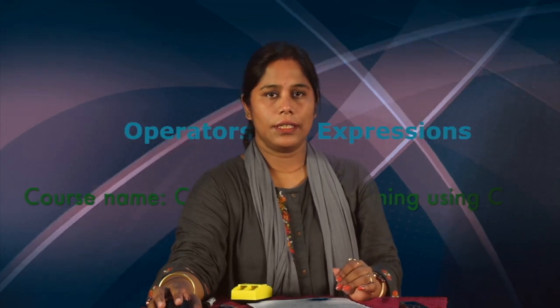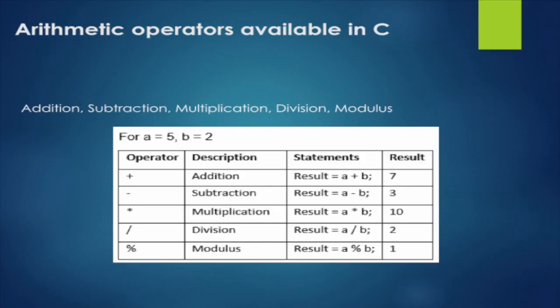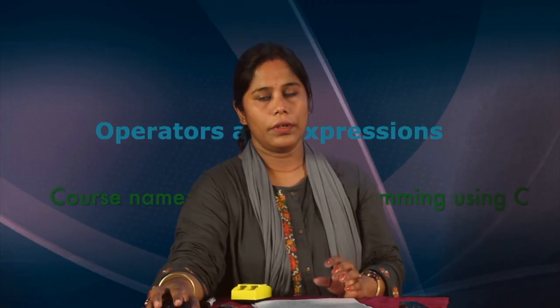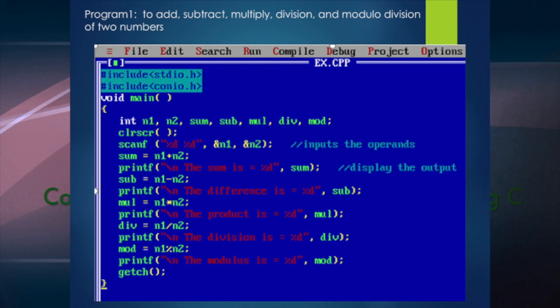I have listed all arithmetic operators in a table. Suppose variable A is 5 and variable B is 2. The plus operator gives A plus B equal to 7. The subtraction operator gives A minus B equal to 3. Multiplication gives A into B equal to 10. The division operator gives 5 divided by 2 equal to 2, and the modulus operator gives the remainder A mod B equal to 1.